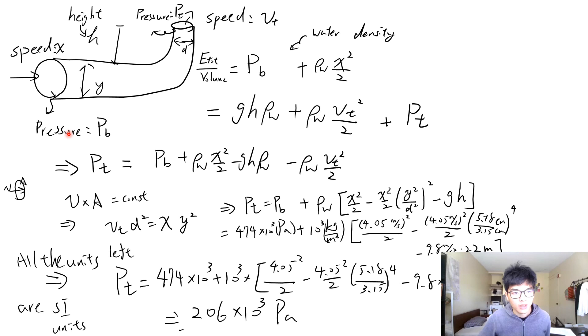And this 4.05 is the speed of the flow at the basement. And the reason why we have this ratio is because we know that the volume of flow is always a constant because the liquid fills the container.